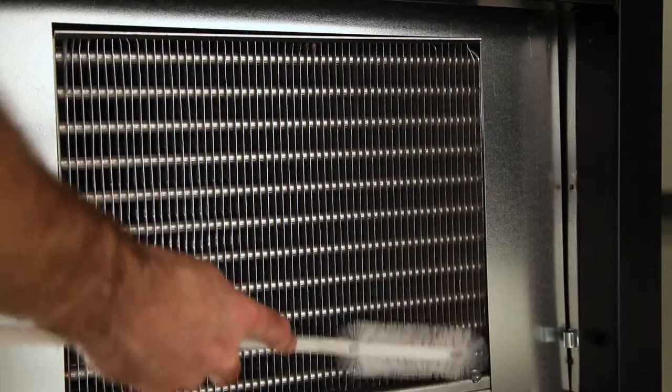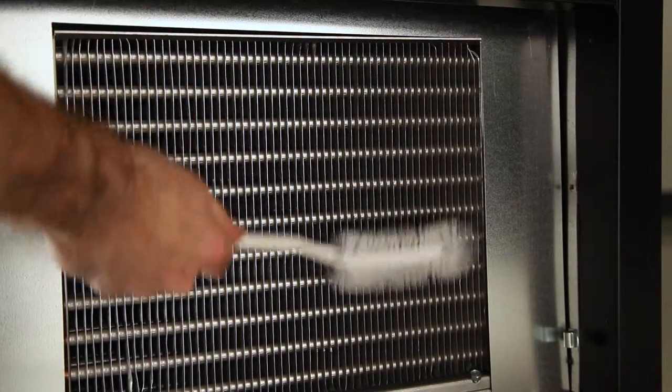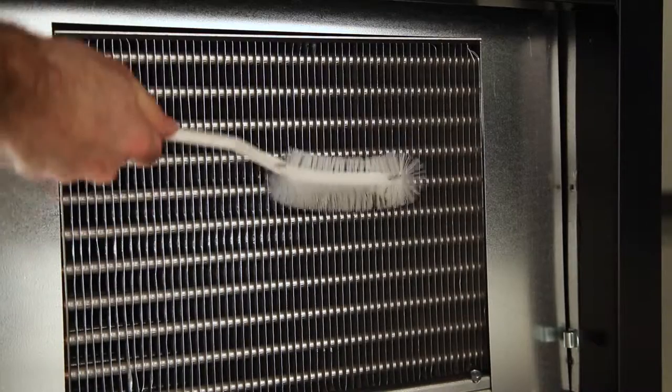Then clean off the condenser coil with a stiff bristle brush. Move the brush up and down the coil and never side to side as this could bend the fins on the coil.